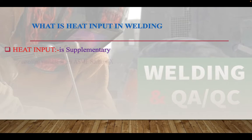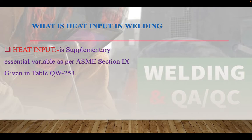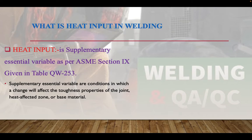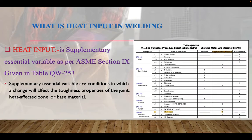Heat input is a supplementary essential variable as per ASME Section 9, given in table QW253. Supplementary essential variables are conditions in which a change will affect the toughness properties of the joint heat-affected zone or base metal.